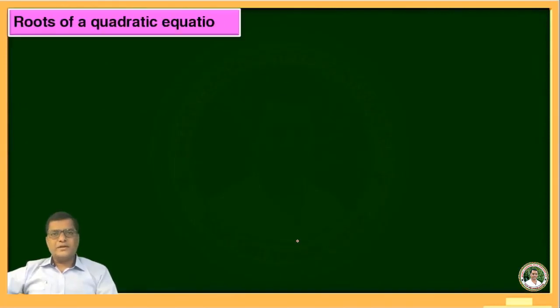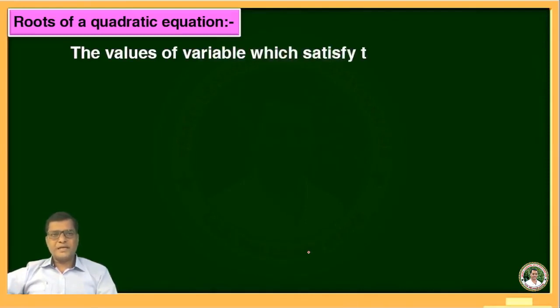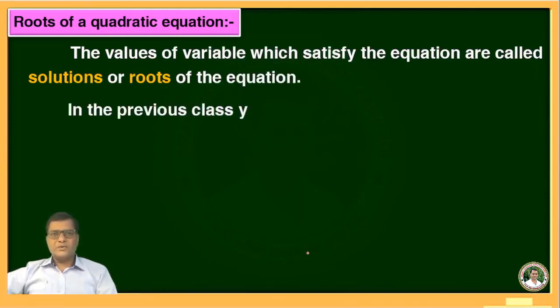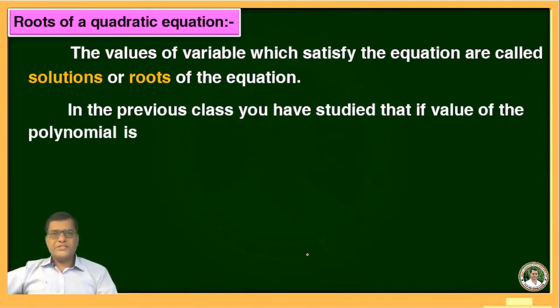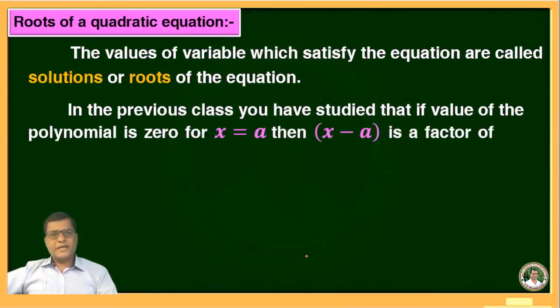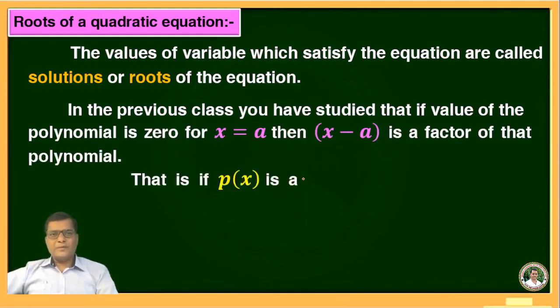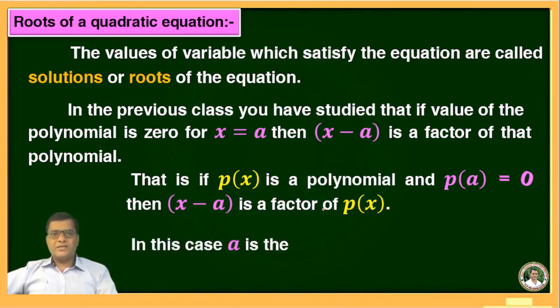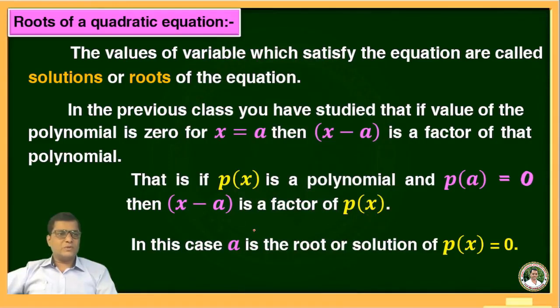Next, we will study the roots of the quadratic equation. The value which satisfies the given equation — meaning LHS equals RHS — is called a solution or root of the equation. In the previous class, you studied that if the value of a polynomial p(x) is 0 for x = a, then x − a is a factor of that polynomial, and a is the root of p(x) = 0.